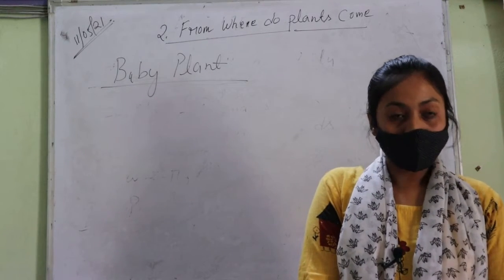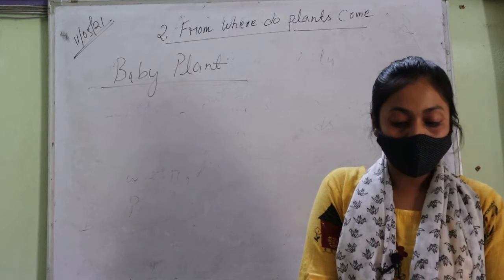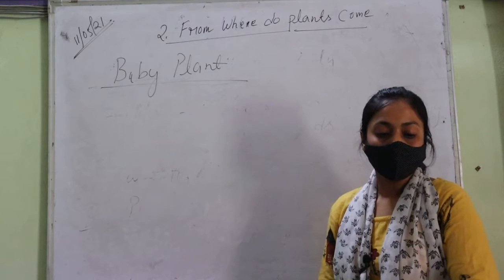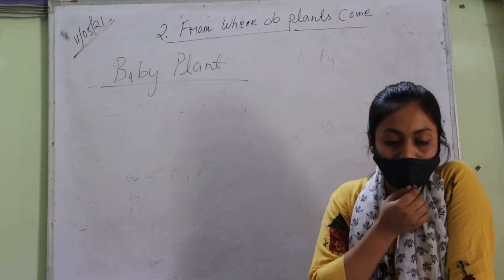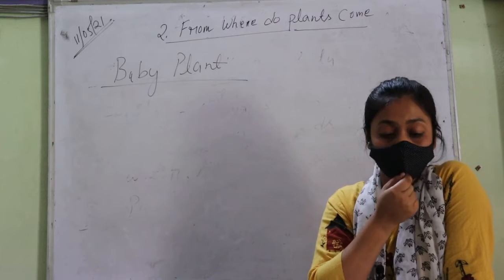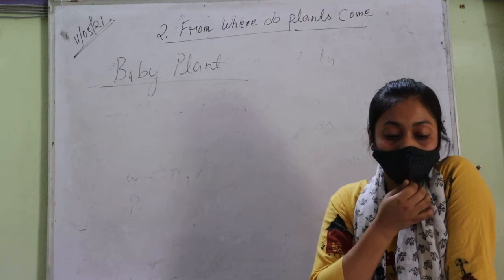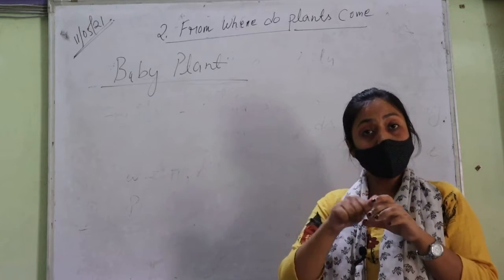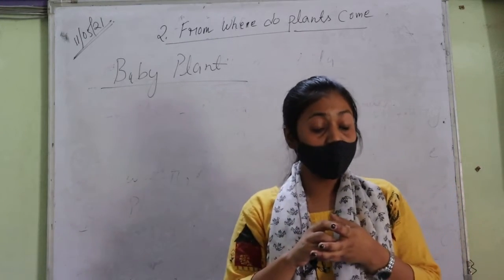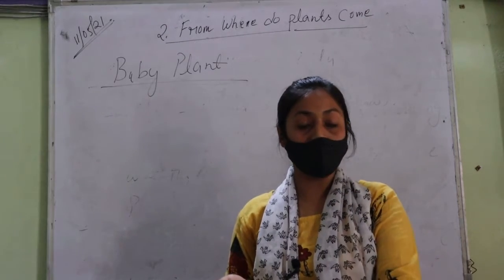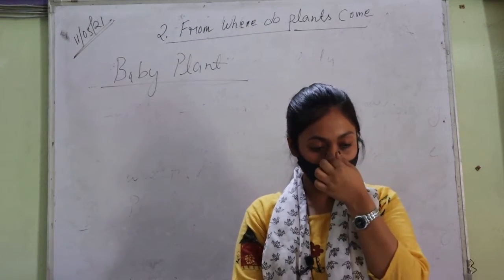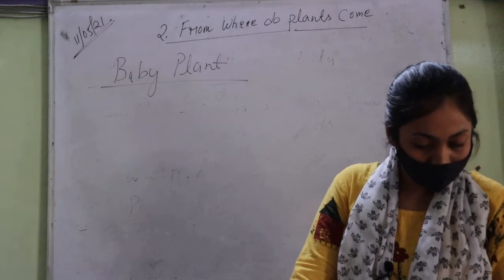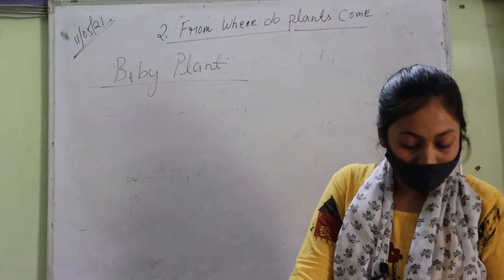Every seed has a baby plant inside it. It contains food stored in it, which helps the baby plant to grow. Baby plant jo hai, woh seed ke under hota hai. This seed contains food, aur yeh food help karta hai the baby plant jo inside the seed hai usko grow karne ke liye. When the seed bursts, the baby plant comes out and grows into a bigger plant.